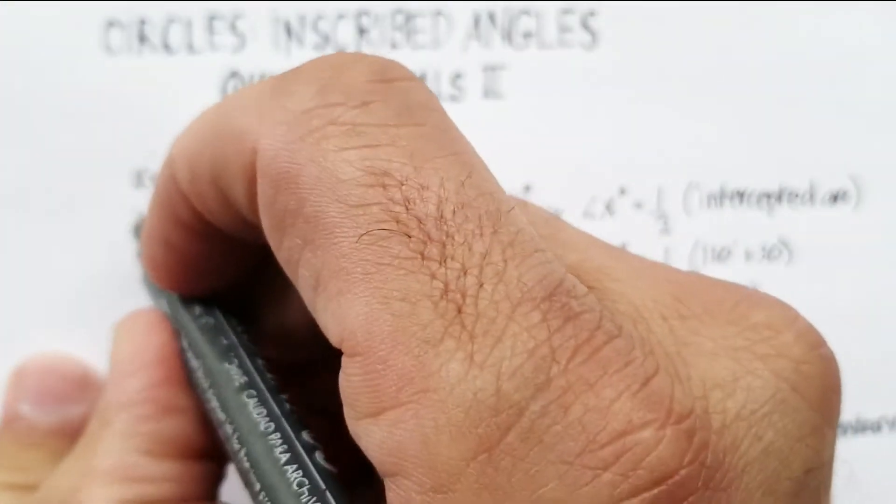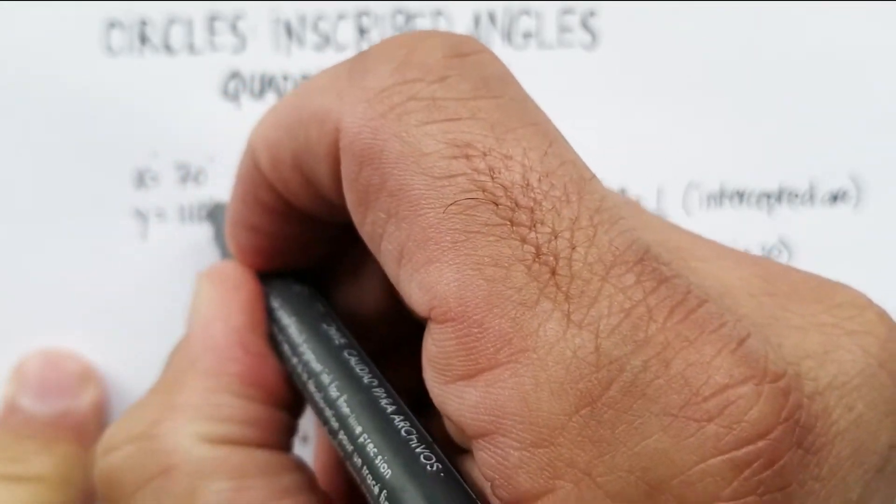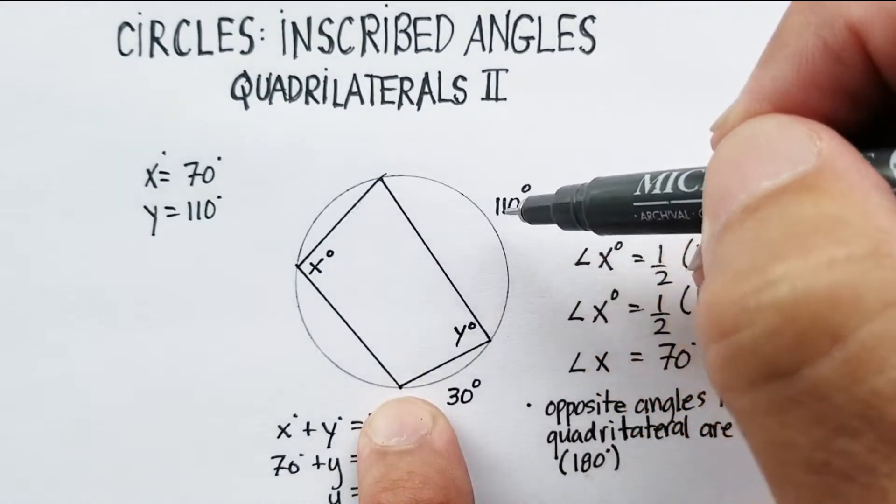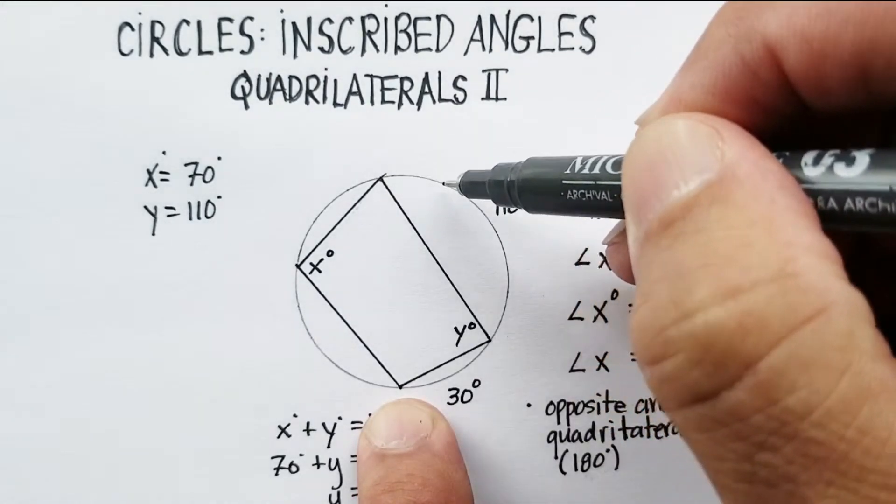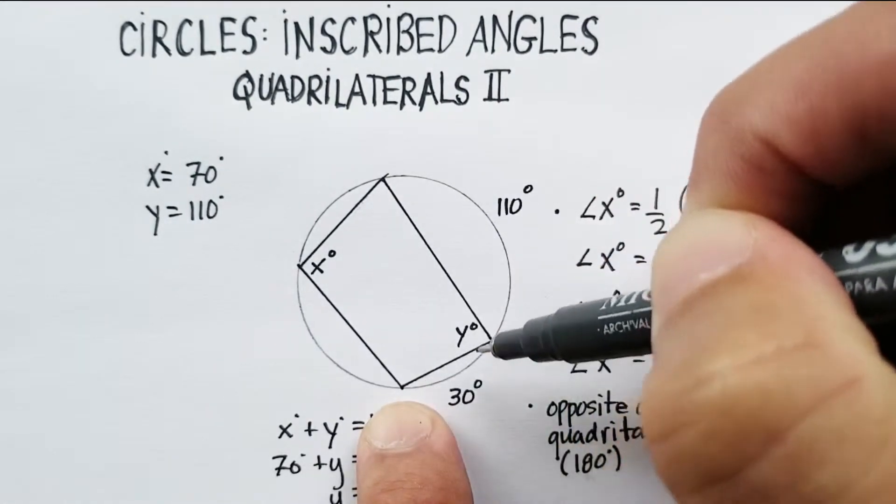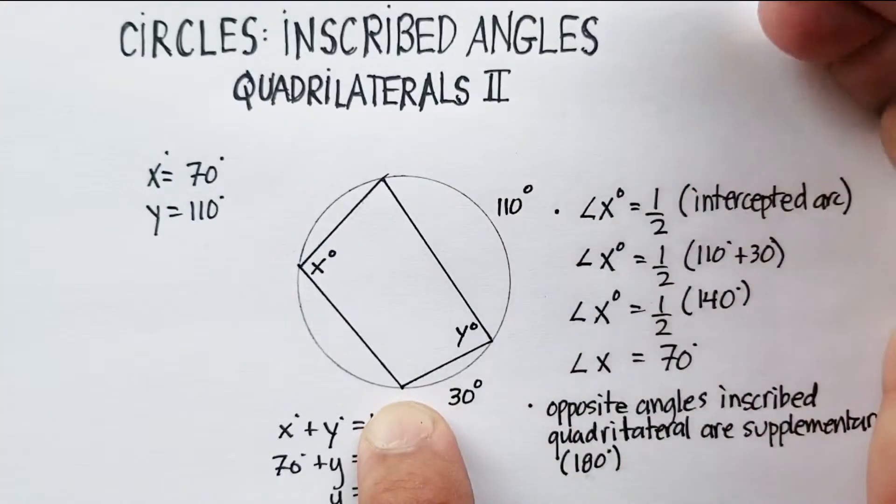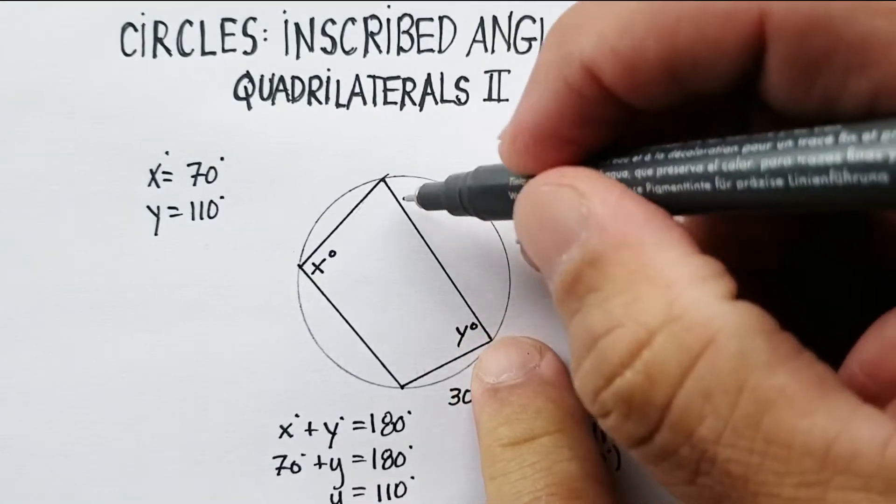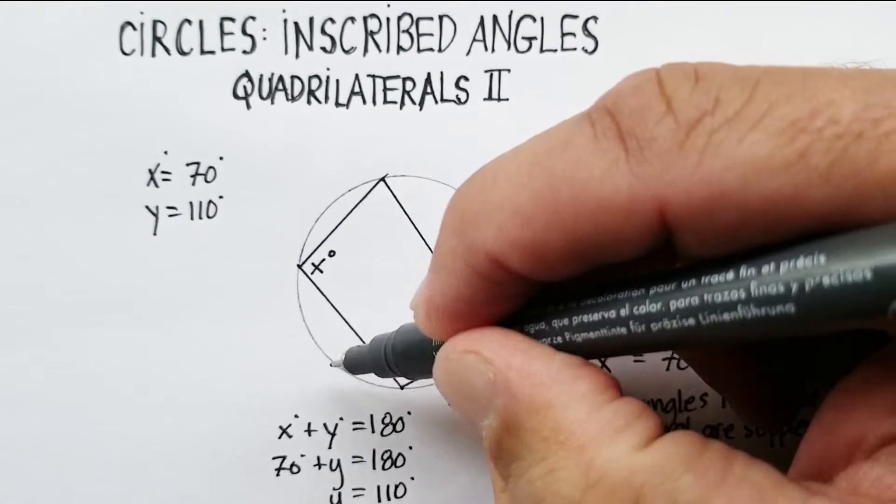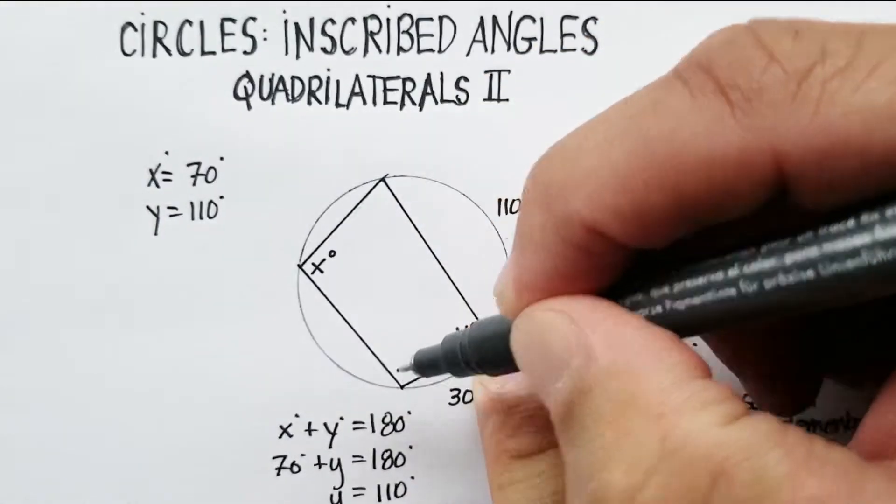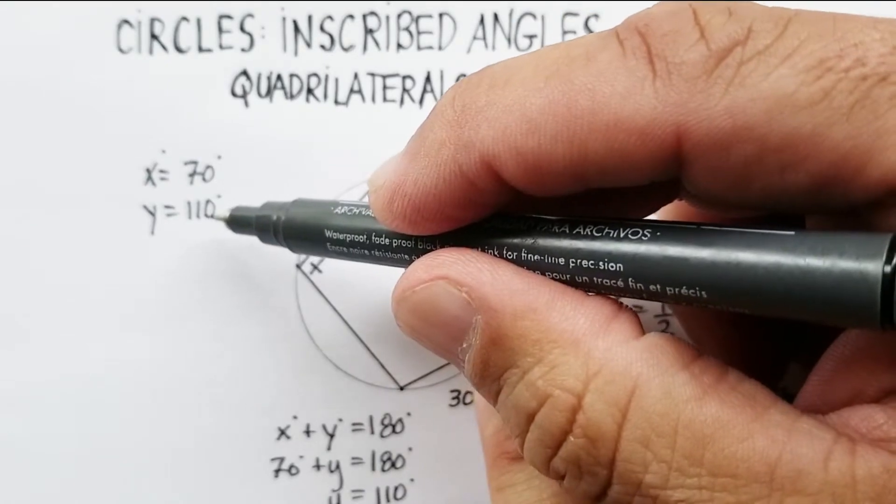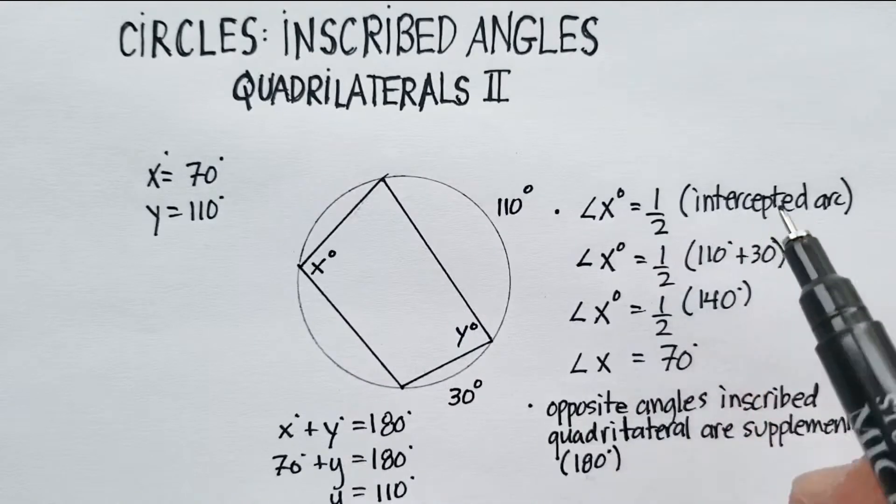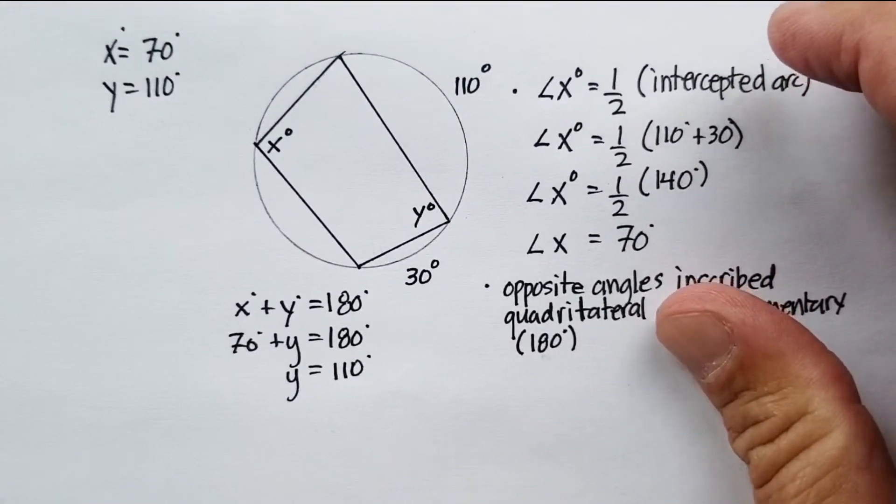Now, there's another way that we can also figure out that angle Y is equal to 110 degrees. We know that this part of the circle, from here all the way to here, is 140 degrees. But we know that a total circle is 360 degrees. So we know that this intercepted arc should be equal to 360 minus 140, and then we can just use this formula over here.